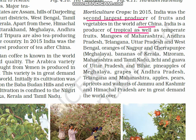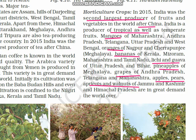Famous regional fruits include: mangoes from Maharashtra, Andhra Pradesh, Telangana, Uttar Pradesh and West Bengal; oranges from Nagpur and Cherrapunji in Meghalaya; bananas from Kerala, Mizoram, Maharashtra and Tamil Nadu; litchi and guava from Uttar Pradesh and Bihar; pineapples from Meghalaya; grapes from Andhra Pradesh, Telangana and Maharashtra; and apples, pears, apricots and walnuts from Jammu & Kashmir and Himachal Pradesh.